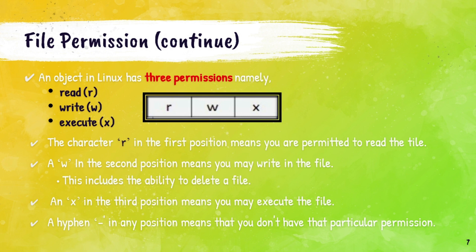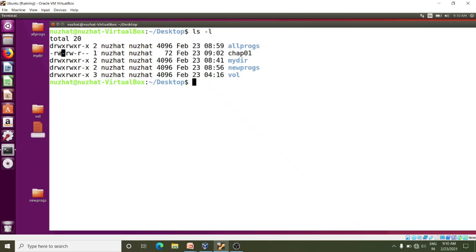For all three users — owner, group, and others — R in the first position means you are permitted to read the file. W in the second position means you may write to the file; write permission allows you to modify the content and also includes the ability to delete a file. X in the third position means you may execute that file. If I consider RW-, this means the owner has read and write permission, but does not have execute permission. A hyphen in any position means you don't have that particular permission.